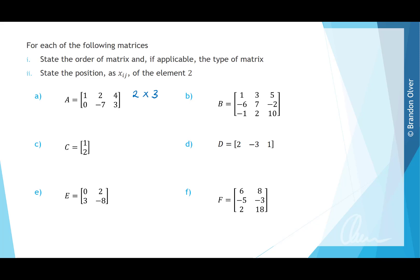We also want to state the position of element 2 in XIJ notation. For matrix A, the element 2 is in row 1, column 2. For matrix B, it has 3 rows and 3 columns, so it is a 3 by 3 square matrix. The element 2 is located at B row 3, column 2.